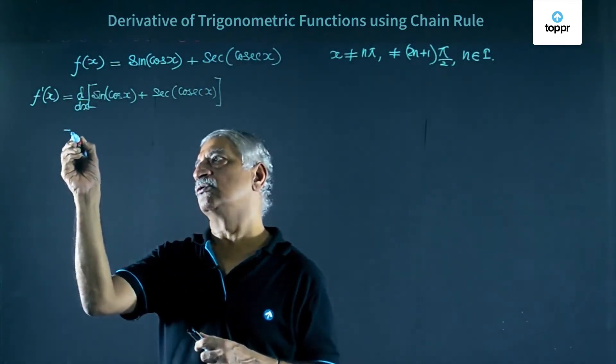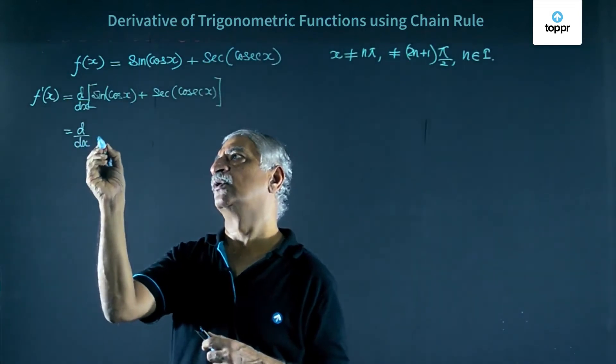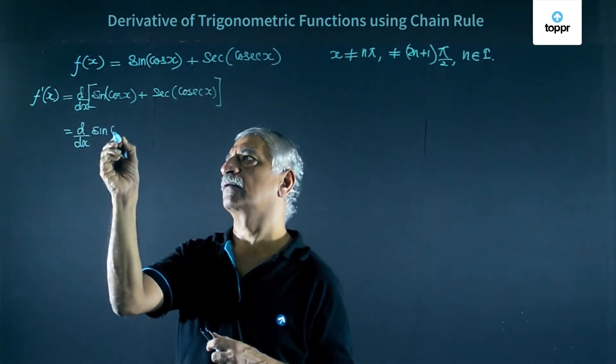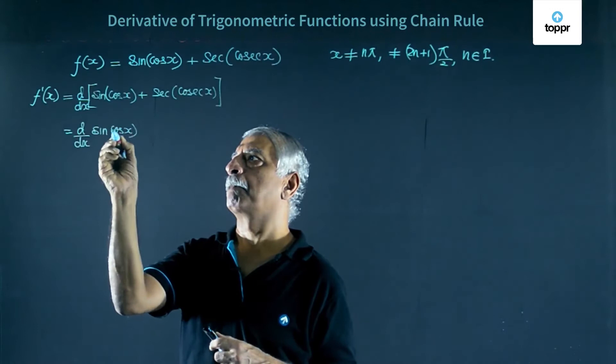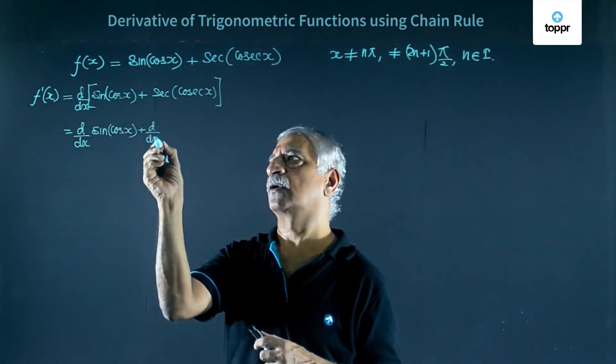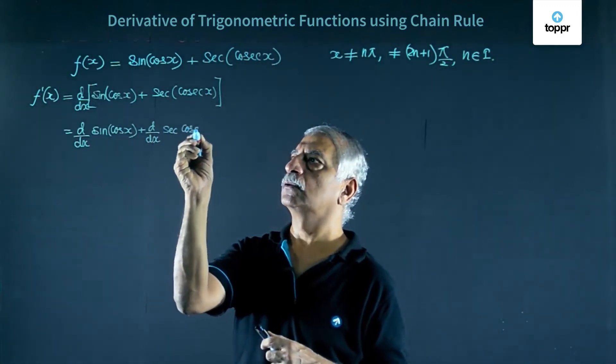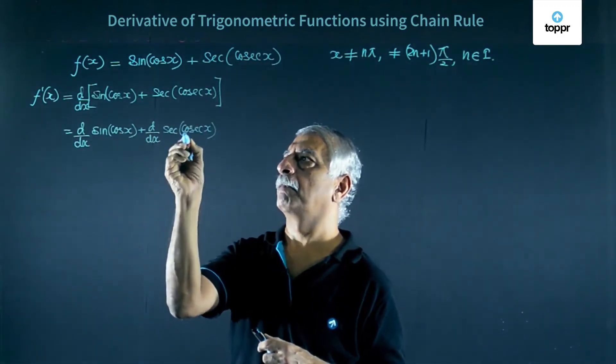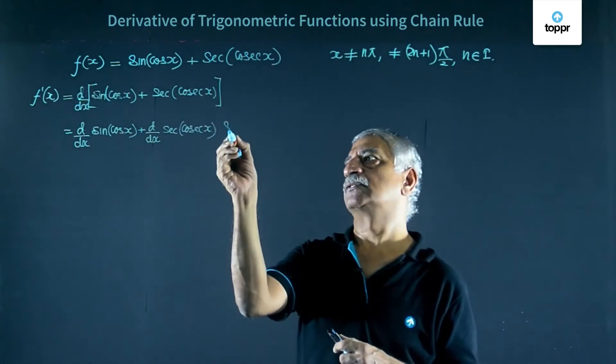This is equal to d by dx of sine of cos x plus d by dx of sec of cos x. This is by sum rule.